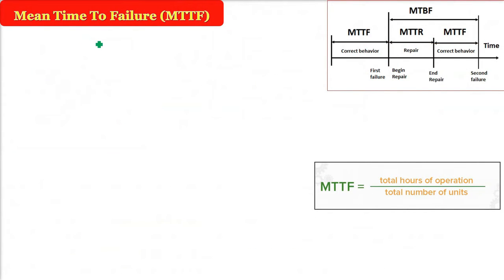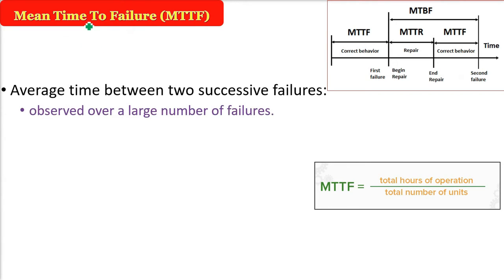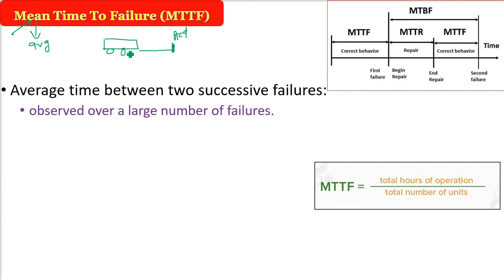Mean Time to Failure, MTTF — first thing, it is a mean, it is an average. So we are not talking about one time; we are talking about different times, adding them and dividing by the number of counts. This is the average or mean. Now, time to failure refers to how much time it takes for a system or software product to fail. We find these times a number of times, take an average, and that is the MTTF — the average time between two successive failures.